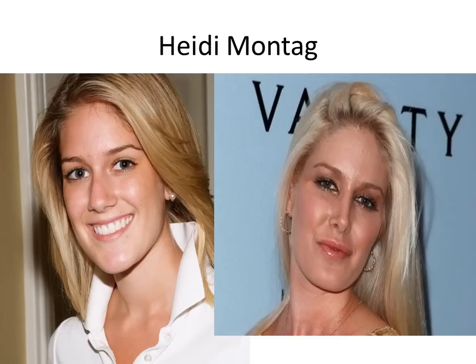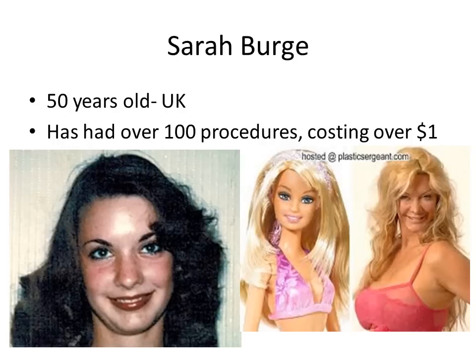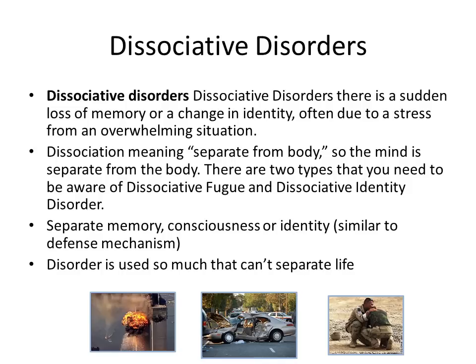Different people classified under body dysmorphic disorder include Heidi Montag, who has had many changes to her physical structure — lip injections, a nose job, and possibly cheek restructuring. Sarah Burge is another example: a 50-year-old woman who has had over a hundred procedures because she wants to look like Barbie, costing her over one million dollars. You can see a picture of her before on the left versus after on the right, with many different procedures done to change her appearance.